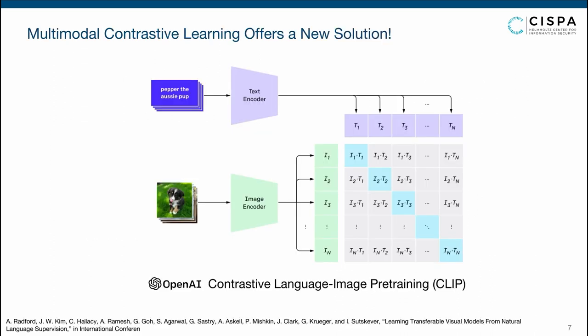In dealing with these challenges, multimodal contrastive learning offers a new solution. We use OpenAI's CLIP in this work. To train the CLIP model, we collect many image-text pairs, feed them into different encoders, and obtain image embeddings and text embeddings. We then compute the cosine similarity between image and text embeddings and maximize it for pairs from the same pair, so that embeddings from different modalities are aligned and projected into the same space.